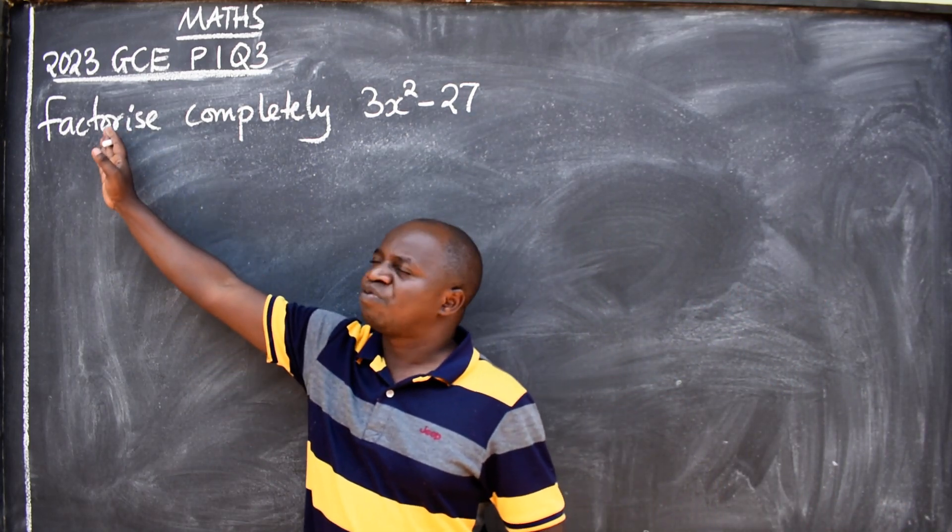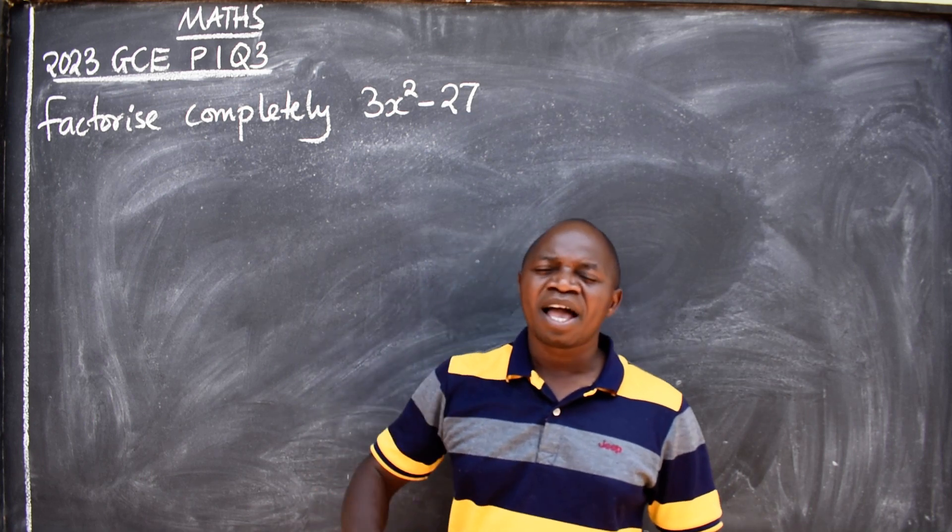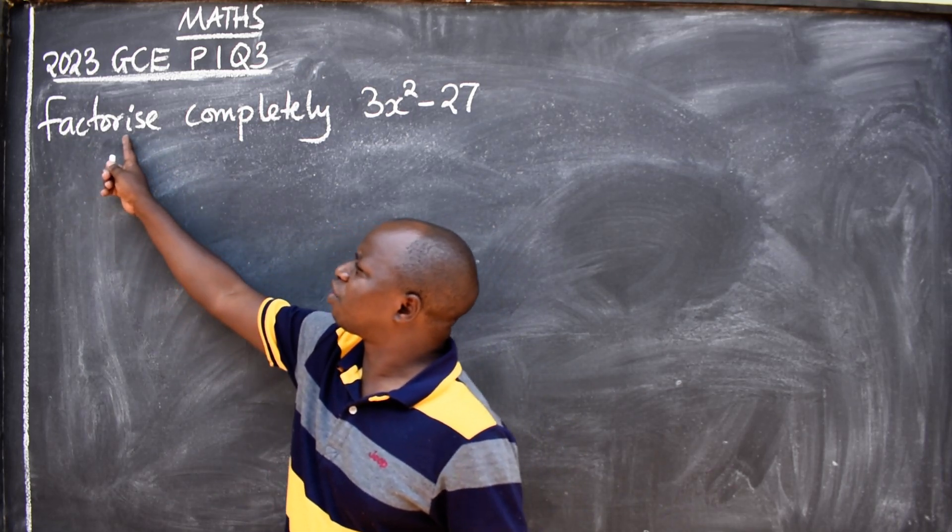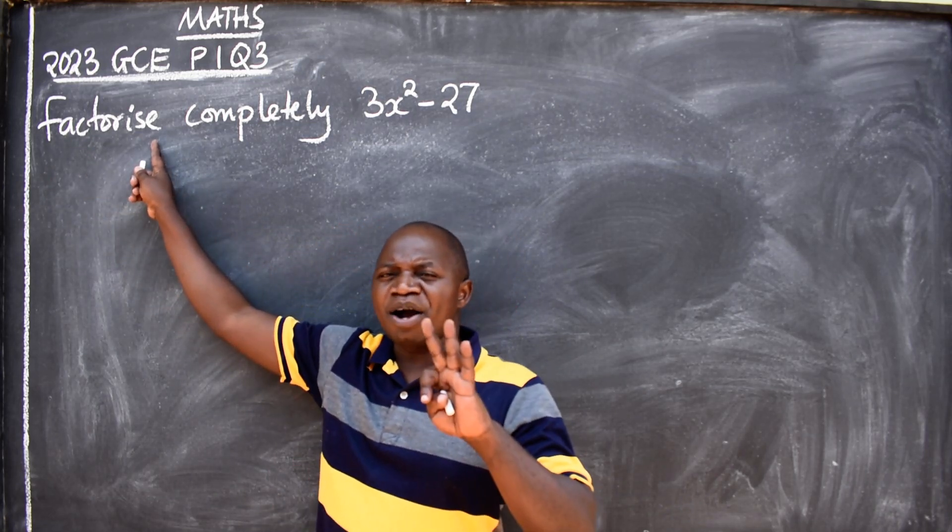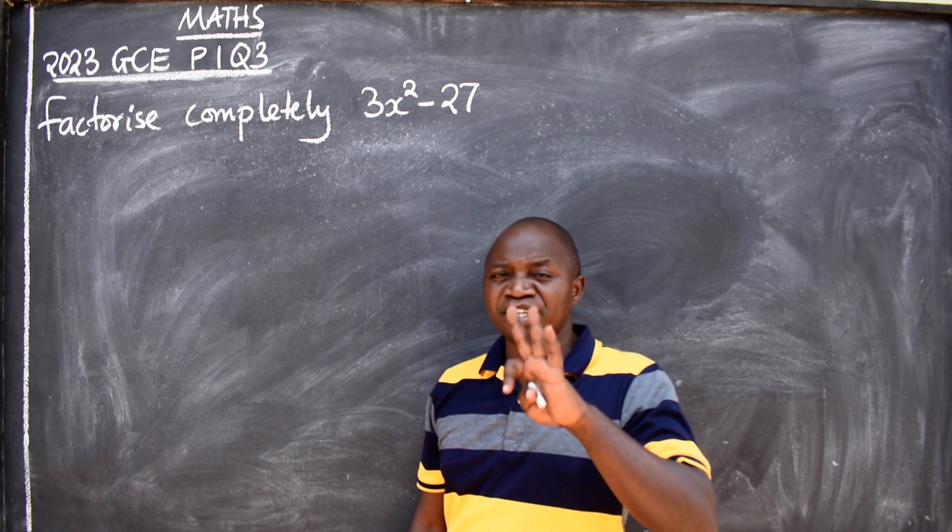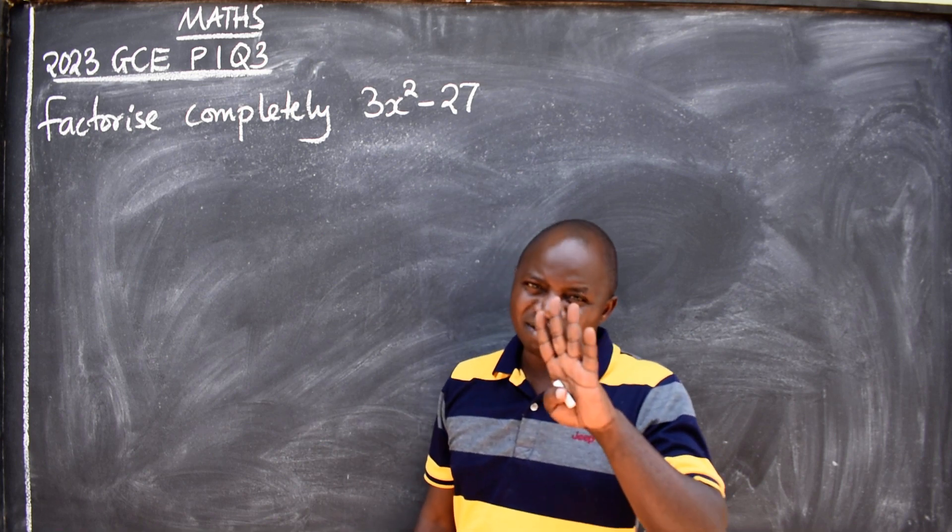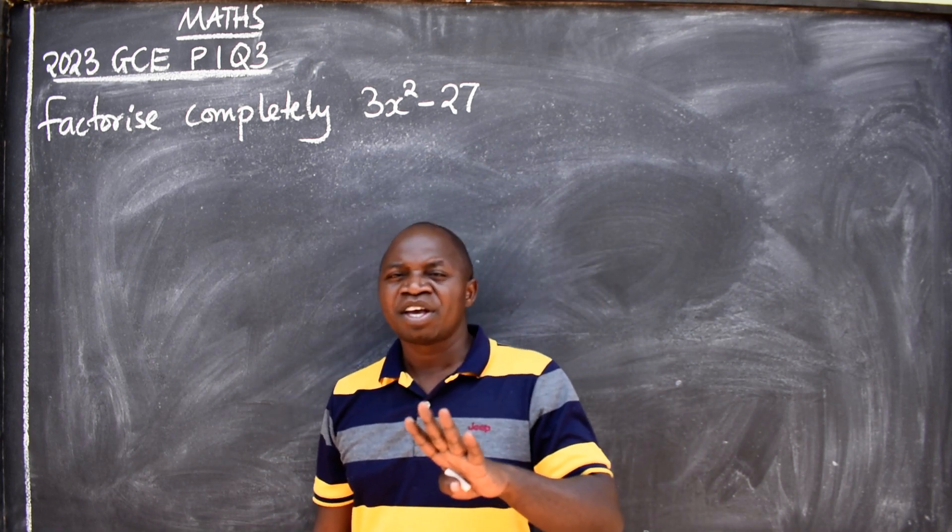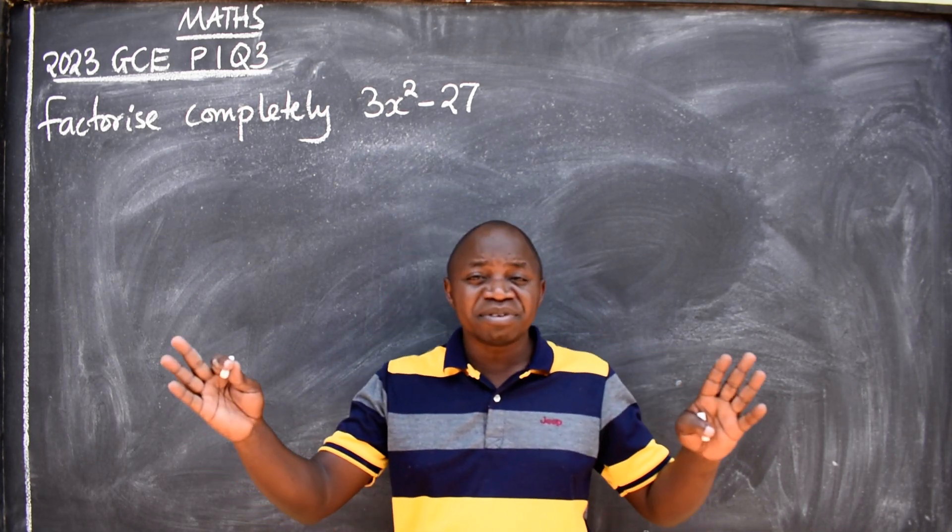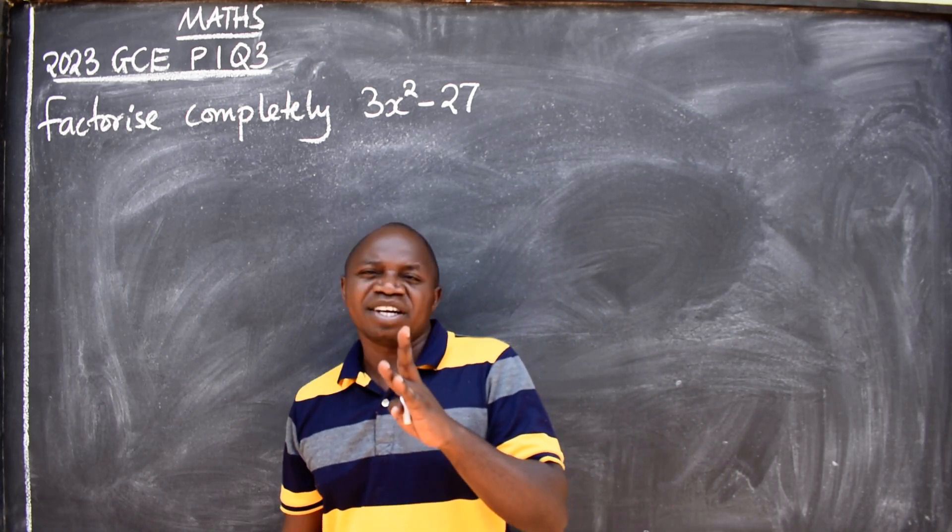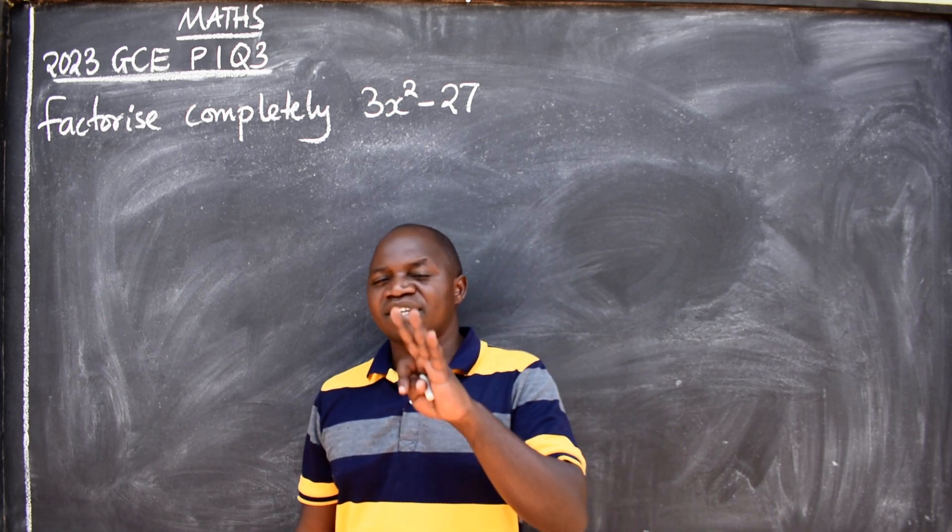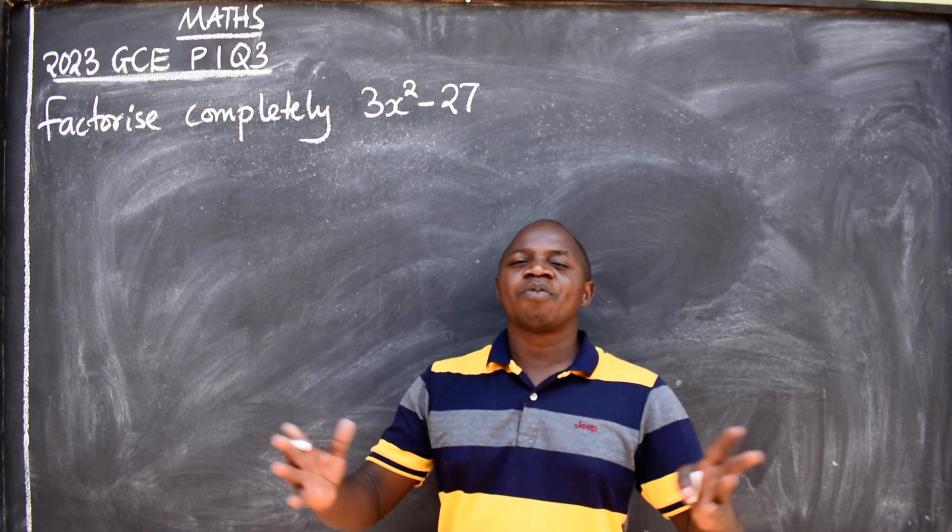The stem is to factorize. Remember we have about three major types of factorization, plus the minor making it four: factorization by grouping (four terms are given), quadratic factorization (three terms are given), difference of two squares (two terms are given), and common factorization.